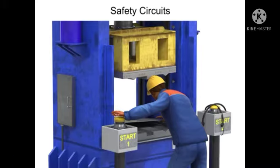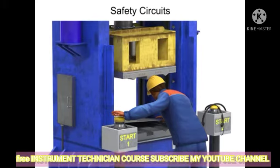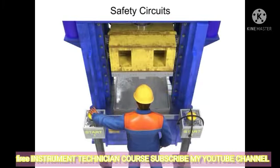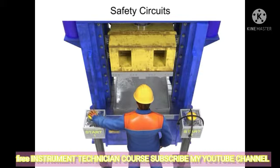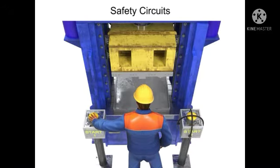To prevent this unsafe condition but still permit a single operator, anti-tiedown circuits are employed. An anti-tiedown circuit requires that the operator actuate both individual controls at the same time. If either control is prematurely actuated or continuously tied down, the cycle will not operate.